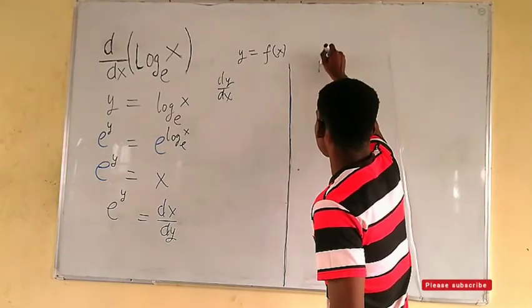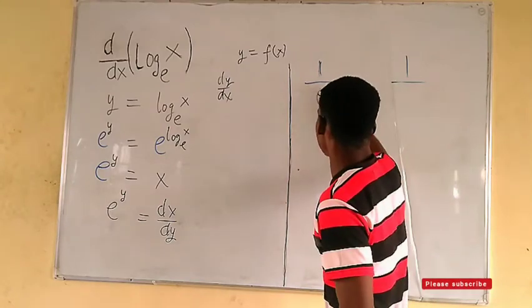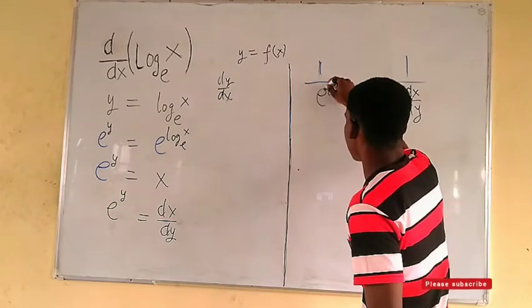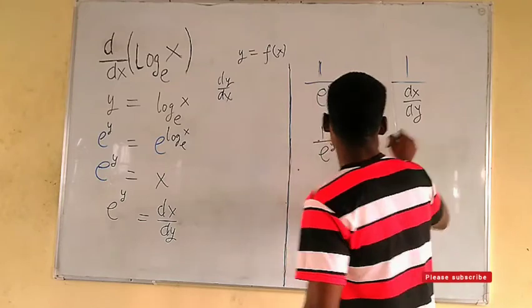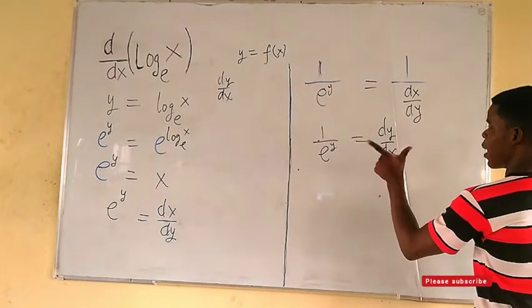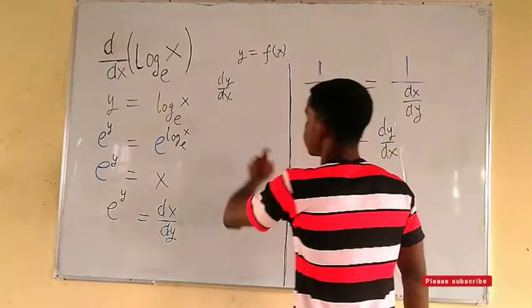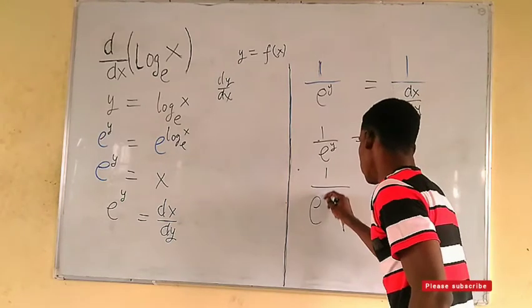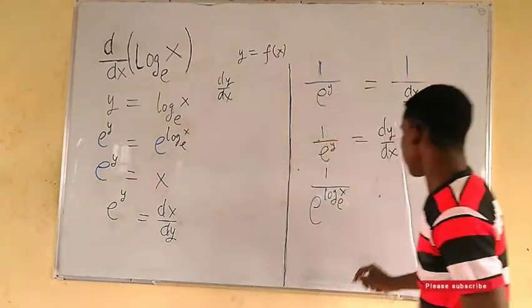Taking the reciprocal on both sides, we get one over e to the power y equals dy/dx. We are almost there — we just need to express this completely in terms of x. Since y equals log of x to base e, we substitute to get one over e to the log of x to base e.